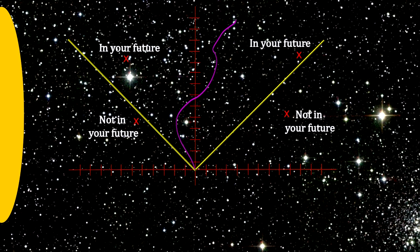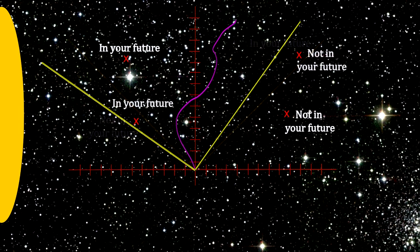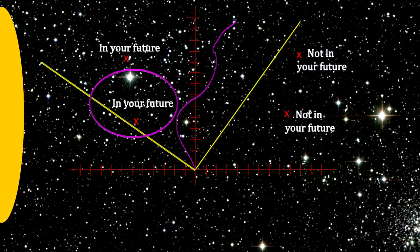Now suppose there is a great mass energy density to the left of the cone. The light would be bent in its direction. We see that points that were impossible to reach before now fall inside the light cone and are reachable.